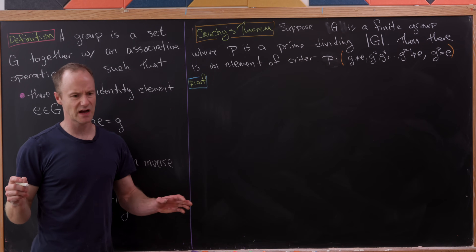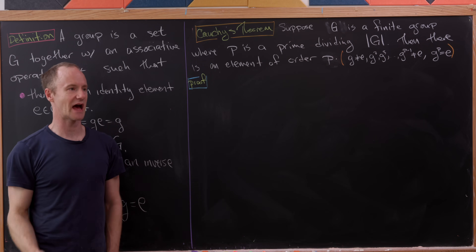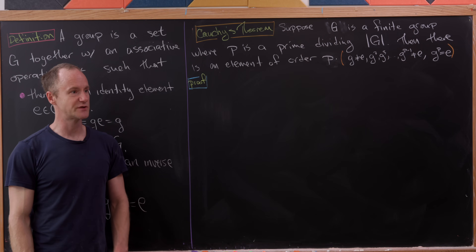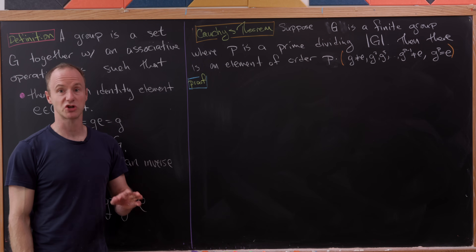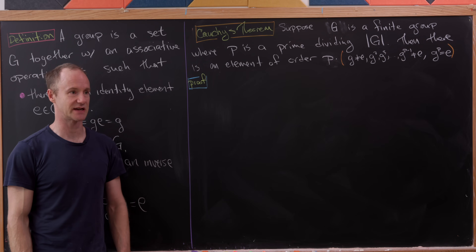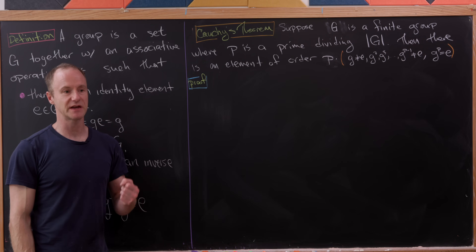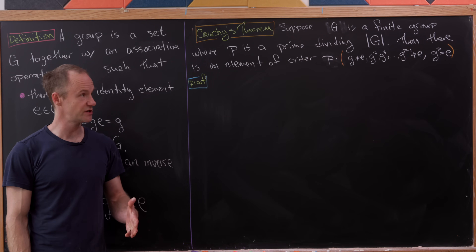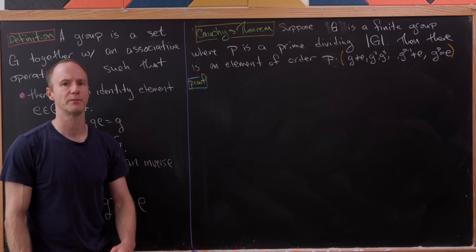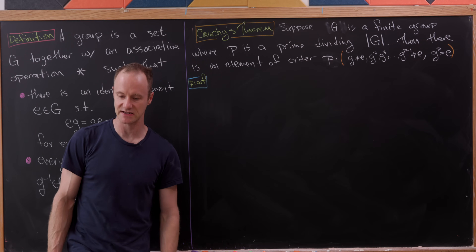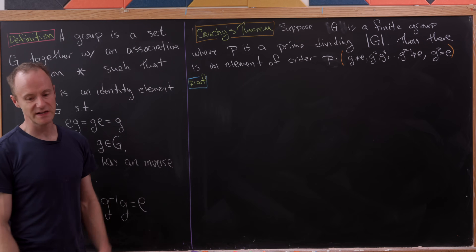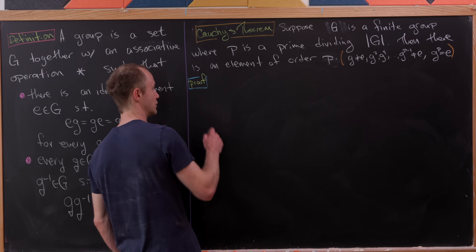This happens very naturally in Z_6: the number two has order three, and three is a prime dividing six, the order of the group. That's because two plus two plus two equals six, which equals zero — you're back to the identity. Let's see how the proof goes.